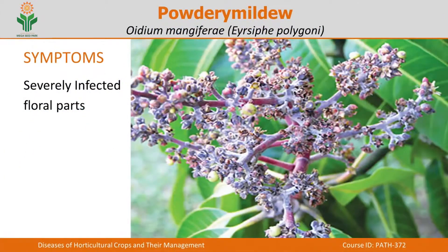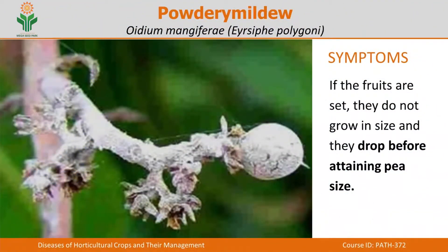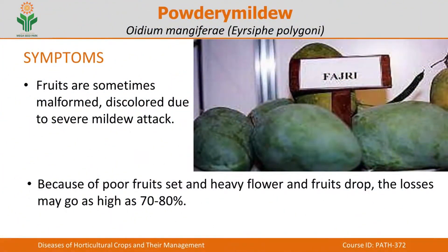In severe cases, the floral parts will be affected with a powdery coating. Even if fruits are set, they will not grow to normal size — they become peanut-sized and drop prematurely before reaching the normal mature state. Sometimes even the fruits that do form will be malformed and colorless because of the mildew attack. Due to very poor fruit set and heavy flower and fruit drop, losses due to powdery mildew can go as high as 70 to 80 percent.